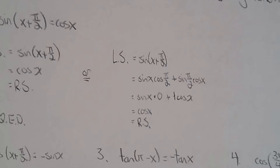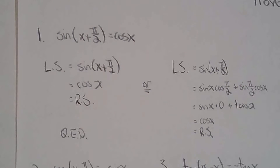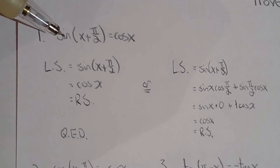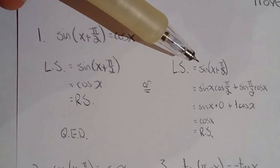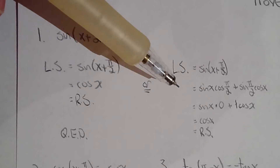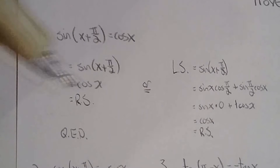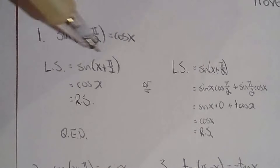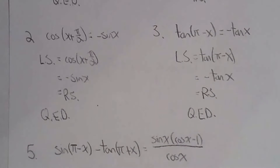Questions one, two, and three are essentially the same. For question one, the expectation is probably to use the addition formula for sine to prove this trig identity, but you can easily just use equivalent trig expressions. If this were on the test, I'd be happy with either way of doing it.